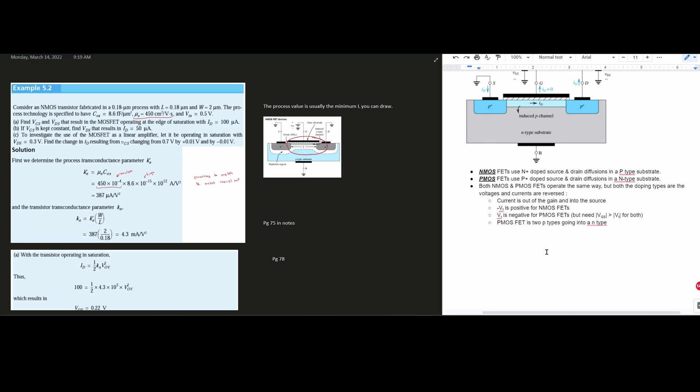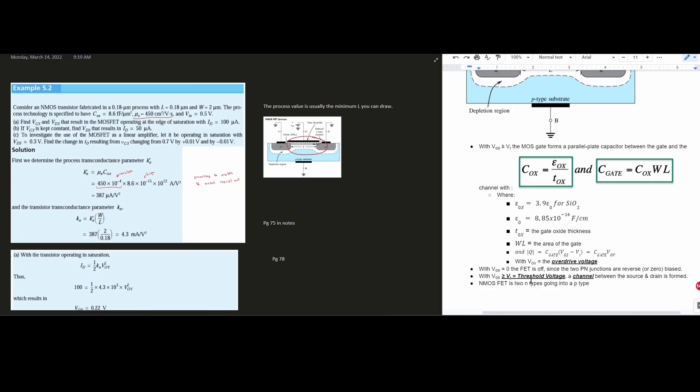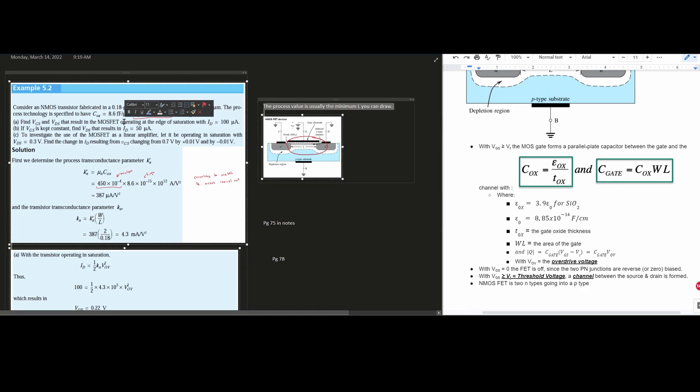For the problems that we're looking at, a lot of the times the K' subscript N, which stands for NMOS, is going to be given to us. But this is how we would calculate it. We would take our μN and then we multiply it by the COX. And in doing this, we would get the value 387 microamps over volts squared. And the units that we have right here, this 10 to the negative 4 and this 10 to the negative 15, that is to get it to be micro. And so is this 10 to the 12th right here. It's to get it to be micro. Notice how up here, we have the F, which I think is like femto or something, and then we have centimeters here. We're basically wanting it to be a consistent unit.